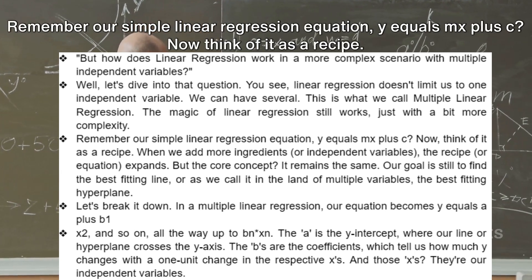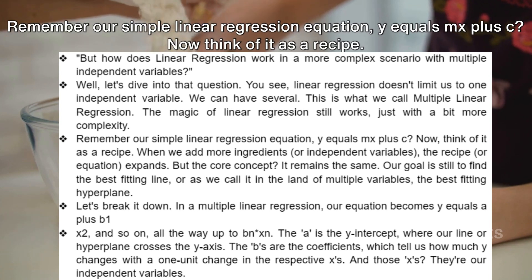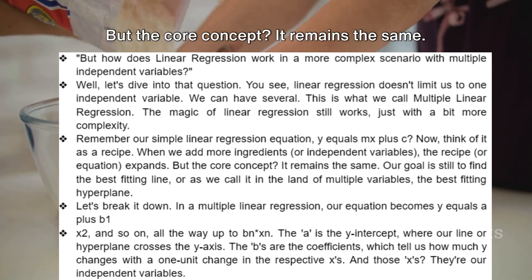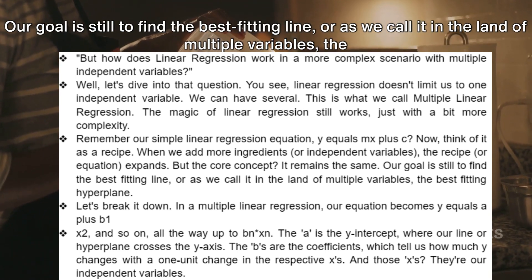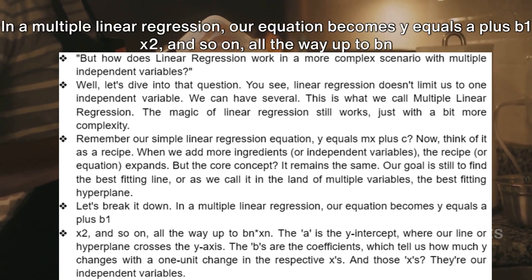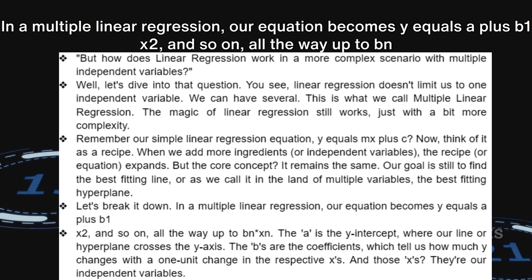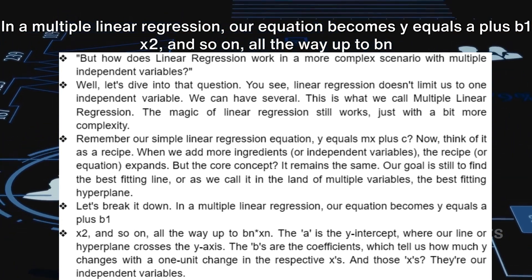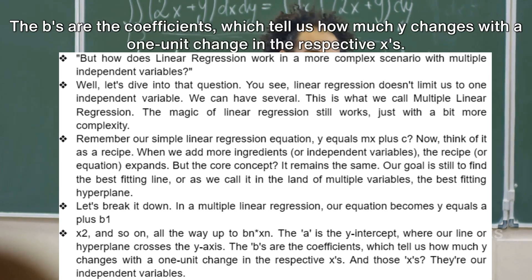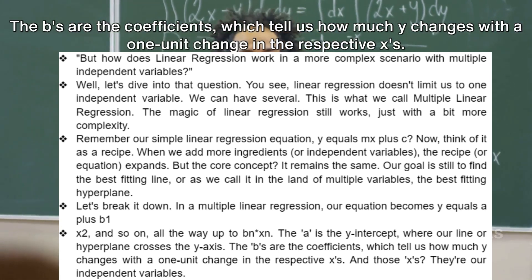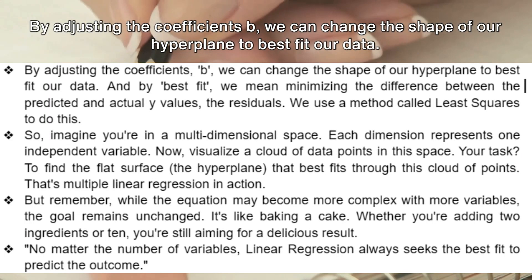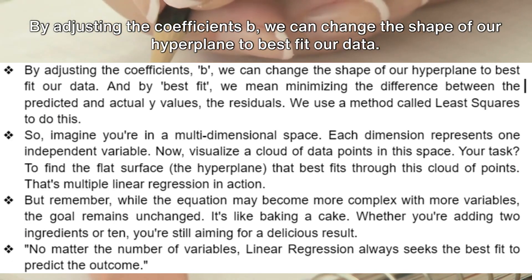Remember the simple linear regression equation y = mx + c? Think of it as a recipe. When we add more ingredients — more independent variables — the equation expands, but the core concept remains the same. Our goal is to find the best-fitting hyperplane. In multiple linear regression, our equation becomes y = a + b1*x1 + b2*x2 + ... + bn*xn. Here, a is the y-intercept, the b's are the coefficients indicating how much y changes with a one-unit change in each x, and the x's are the independent variables. By adjusting these coefficients, we change the shape of the hyperplane to best fit our data.